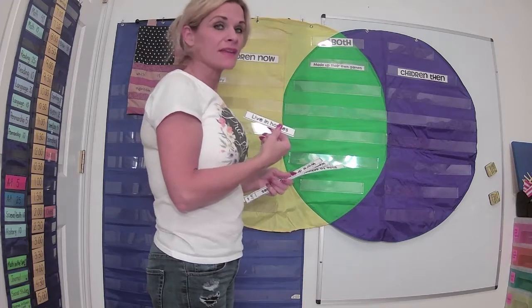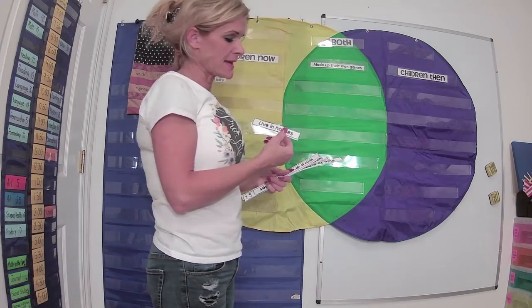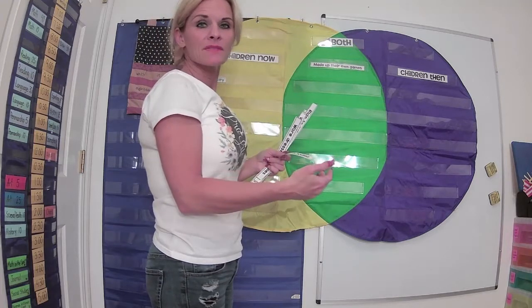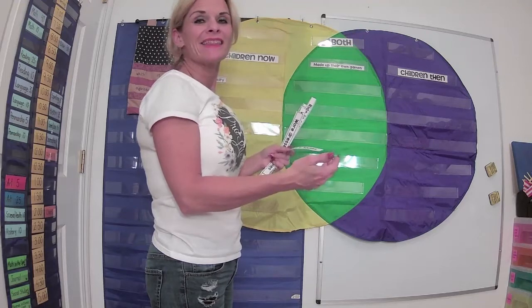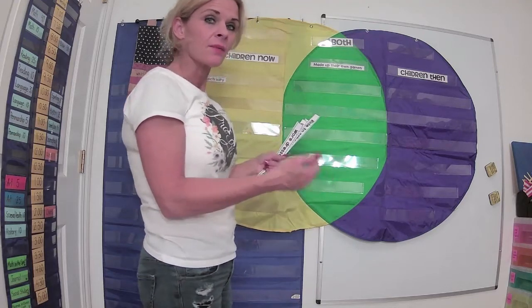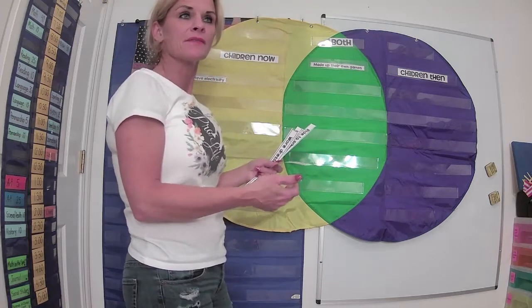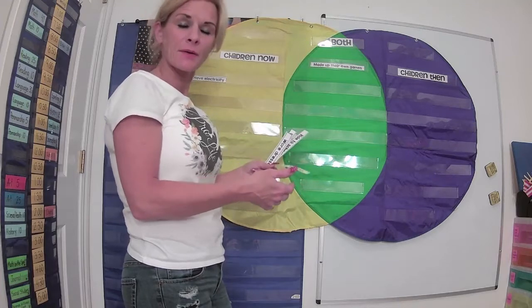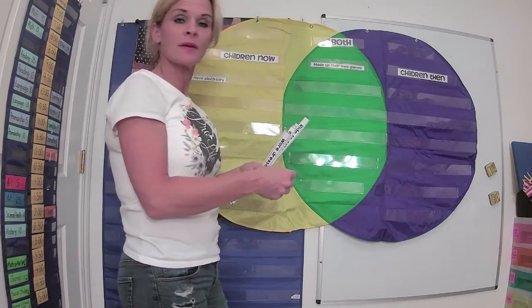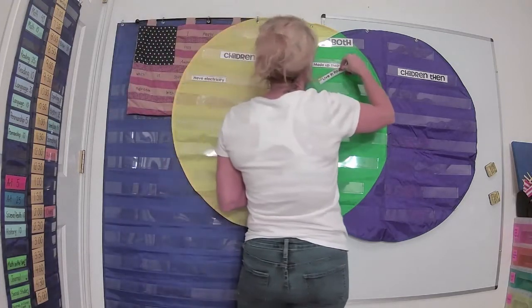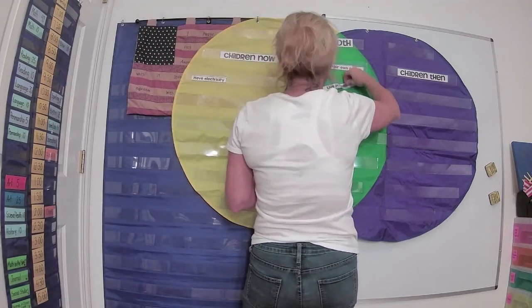'Live in houses.' That is tricky, isn't it? Because we might say the Wampanoag children lived in wigwams. But the thing is, it was still their home or their shelter. We live in houses now too. Some people might live in trailer houses, some in brick houses, some in apartment houses — but we all have shelter. So we're thankful to say that's true about both.